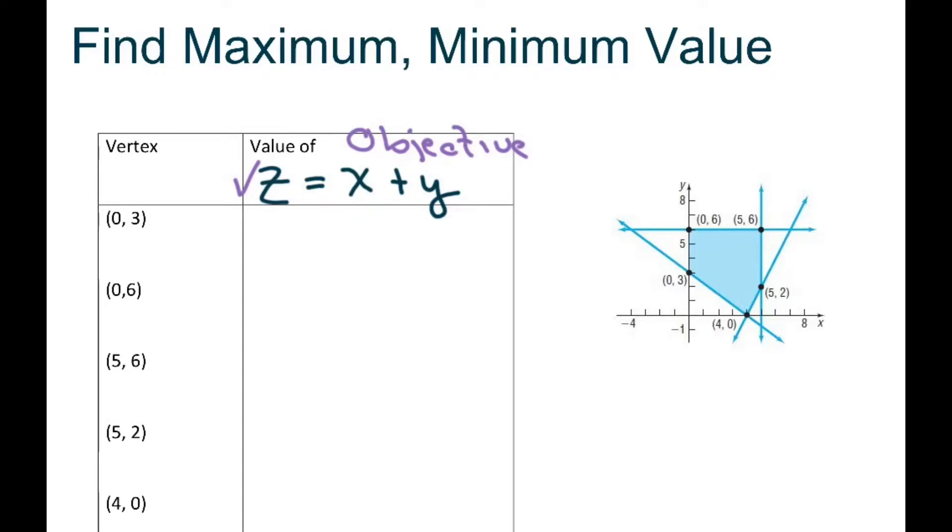Basically, all you're going to do is take our corner points, and I already have them listed here, and plug them in to find our minimum and maximum values. So we have for the first one, we have z equals...